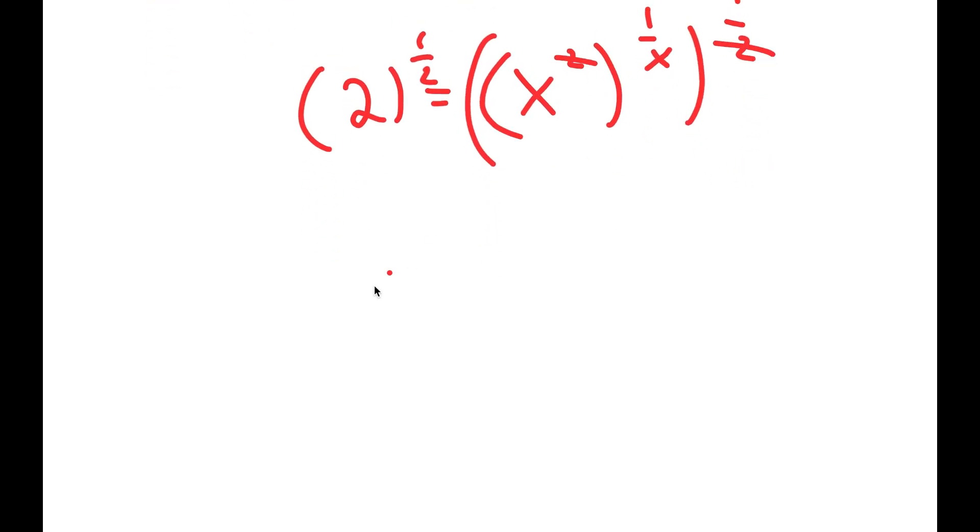And so these two cancel out, and I get 2 to the power of 1 over 2 is equal to x to the power of 1 over x.